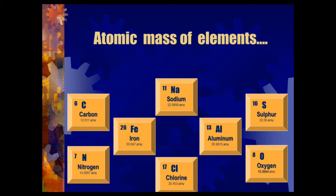Atomic masses of some elements: Carbon 12 AMU, Nitrogen 14 AMU, Iron 56 AMU, Sodium 23 AMU, Chlorine 35.5 AMU, Aluminium 27 AMU, Sulfur 32 AMU, and Oxygen 16 AMU. These are presented in the periodic table.